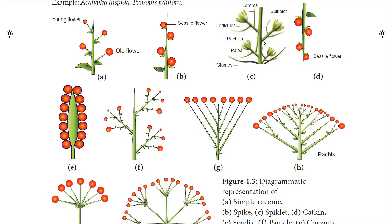The fourth type is catkin or pendular spike. Here the long axis is drooping down; the drooping axis bears small unisexual or bisexual flowers and hangs from the branch of the plant like a ament. Example: Salicaceae.